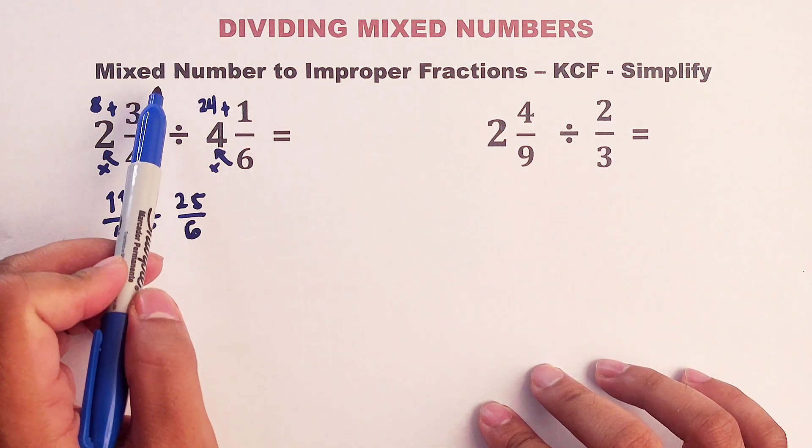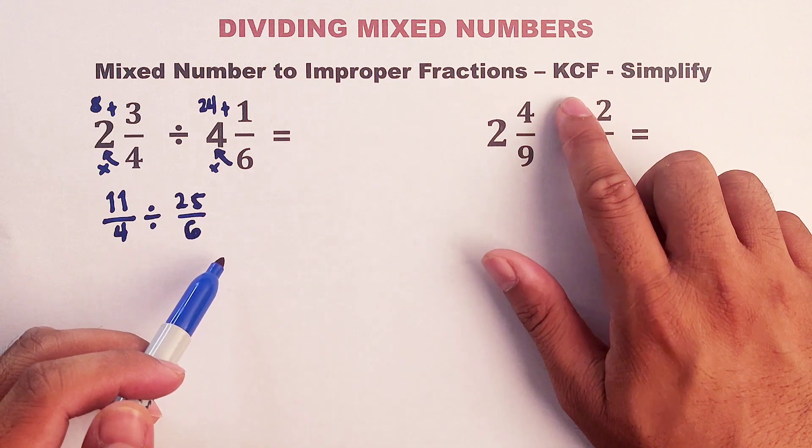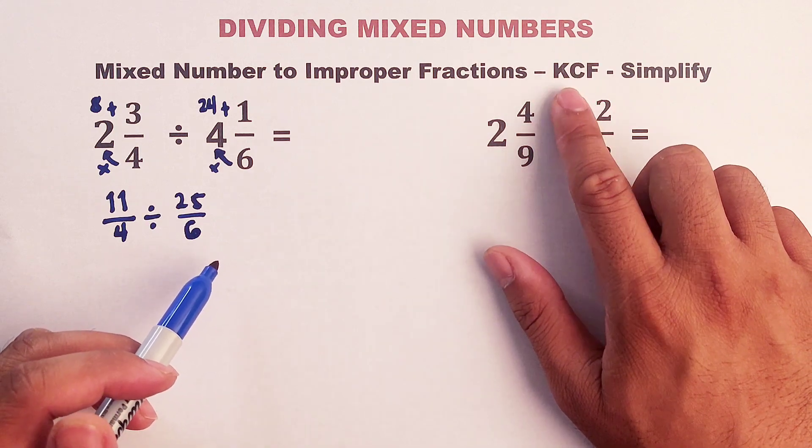So we are done with the first step by converting the mixed numbers to improper fractions. Now we will use the KCF. Keep, change, and flip.